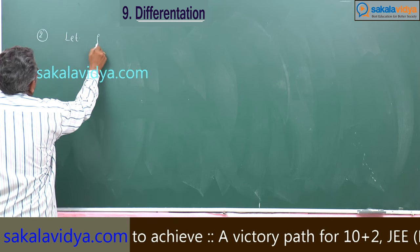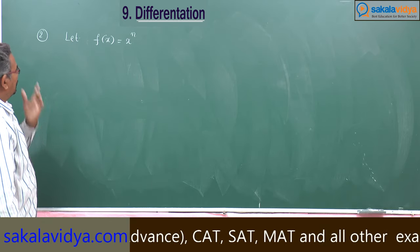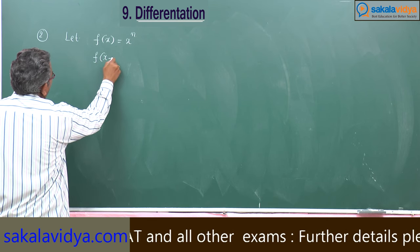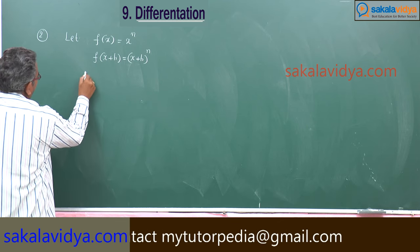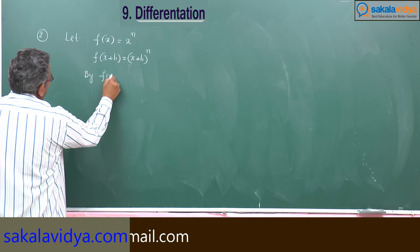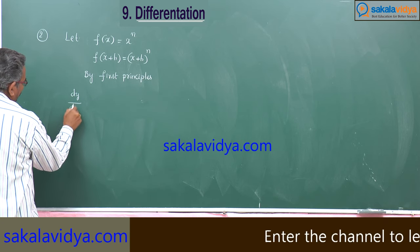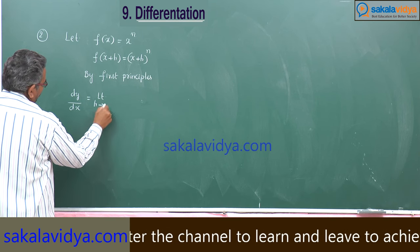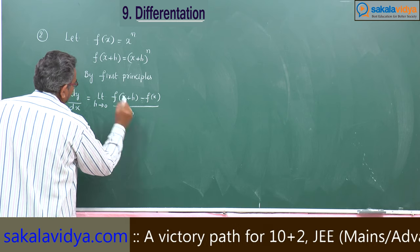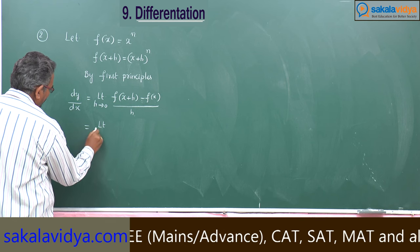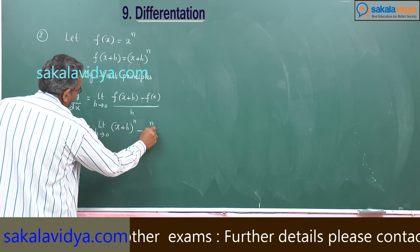Now let us suppose f of x is equal to x to the power of n, where n is a real number. What is the derivative of x to the power of n? First find f of x plus h, which equals x plus h to the power of n. By first principles, dy by dx equals limit h tends to 0 of x plus h to the power of n minus x to the power of n, all divided by h.